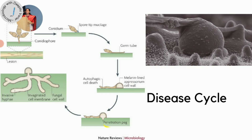Once the infection peg penetrates the plant cell tissue, hyphae form inside - the infection hypha grows and forms invasive hyphae present in the cell. Disease lesions are usually seen four days after inoculation. The fungus grows very rapidly and completes its life cycle quickly within one plant, which is why it can spread from one plant to another. In the same growing season it can have multiple infection cycles, spreading from one plant to another several times.